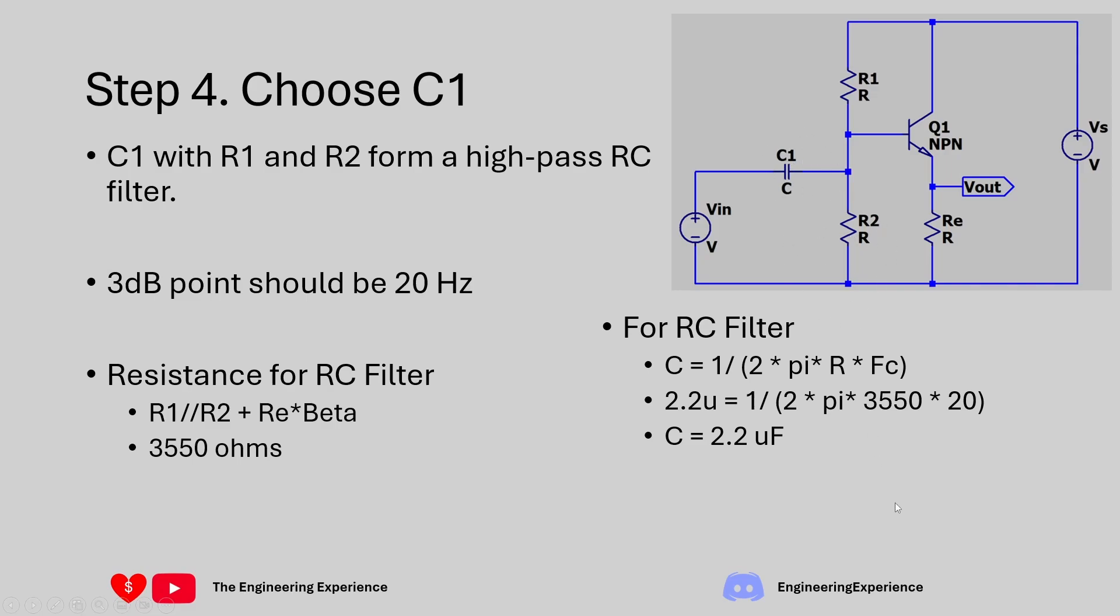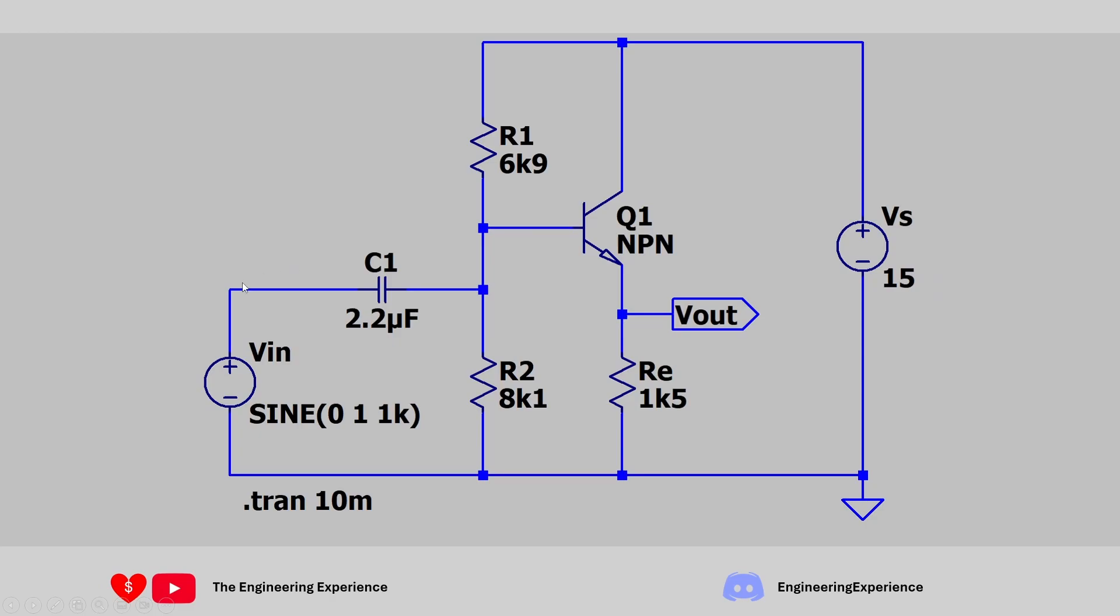Now strictly speaking, as part of the question, we should also filter out any frequencies above 20 kilohertz. But all that would mean is that you add a filter in front of our C1 over here. So between Vin and C1, you would add a low pass filter. That would basically be an R and a C going in parallel over here. And you would set the cutoff frequency for that filter to be 20 kilohertz.